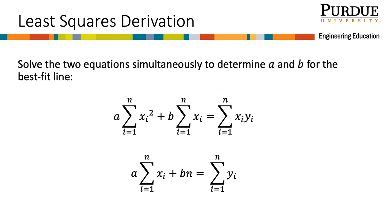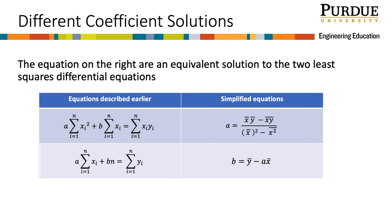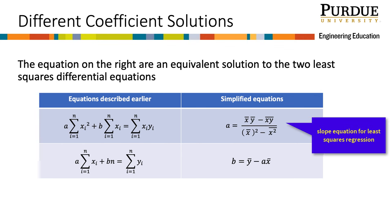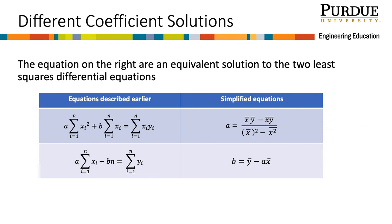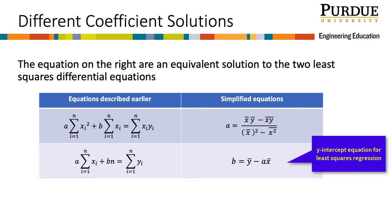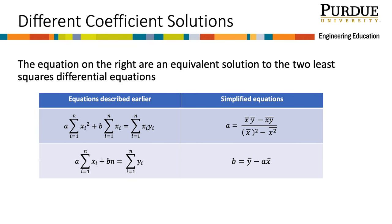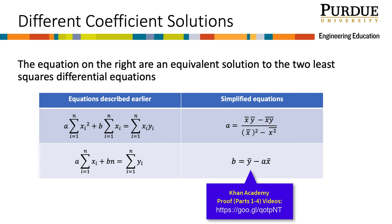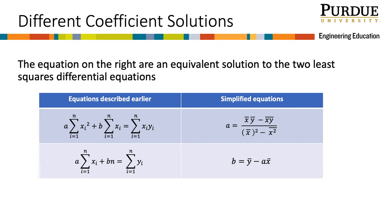Now we have these two equations with two unknowns, a and b. The x's, y's, and n's are calculated from the data. We could use these equations and plug in the numbers, then solve the two equations with two unknowns. But we can simplify further using substitution and algebraic manipulation to arrive at the simplified least squares regression equations: the slope equation a equals x-bar times y-bar minus x-bar, all divided by x-bar squared minus x-squared bar, and the y-intercept equation b equals y-bar minus a times x-bar. If you are interested, you can see how to derive these equations in detail at Khan Academy.